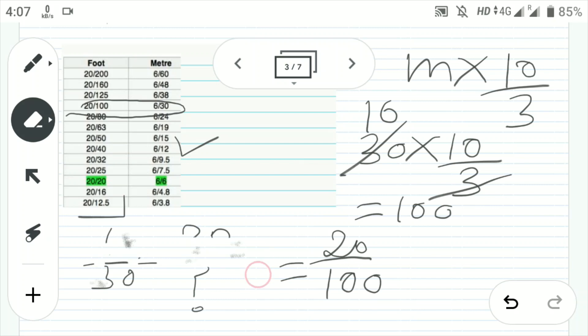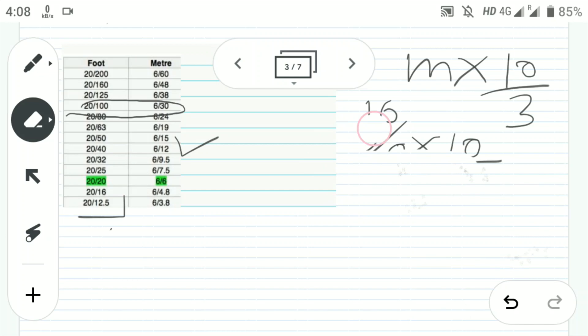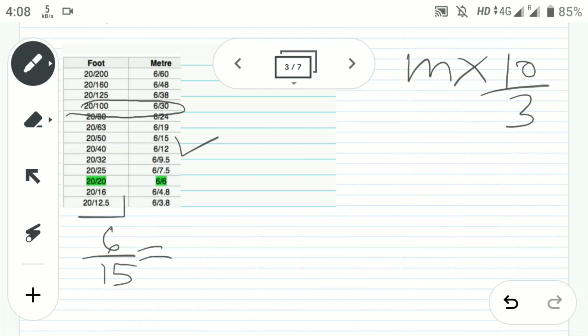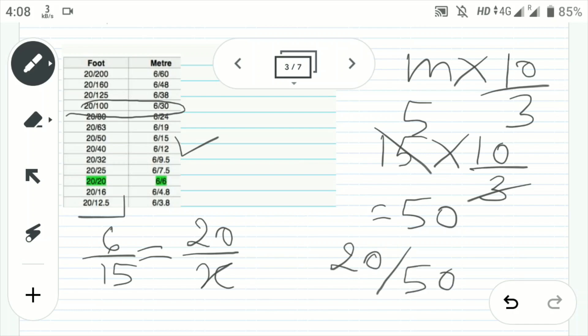Now similarly, let's try for another one. Let's check for the 6 by 15. So again you will do the same thing. 6 by 15. You know 6 is 20. We have to calculate 15 in foot. So you will be doing the same thing, 15 into 10 by 3. And here you will get the 5, and then it will become 50. That means 6 by 15 in foot system is 20 by 50. You may check the answer. See? We have got the correct.